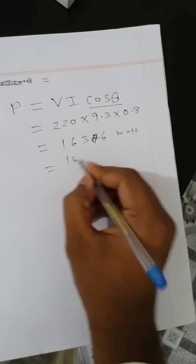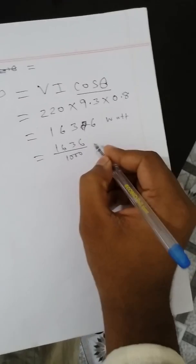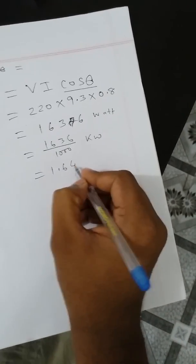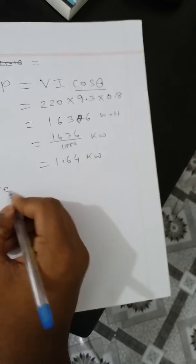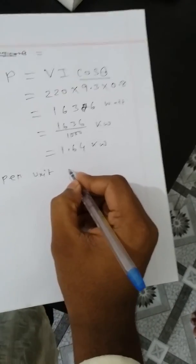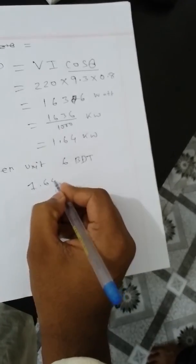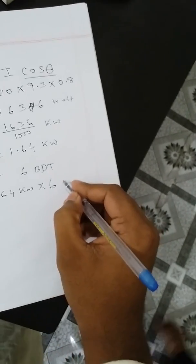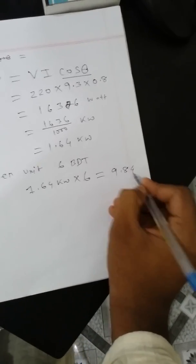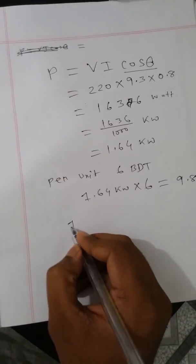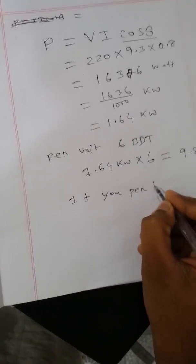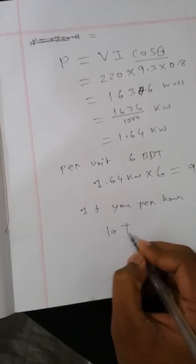Converting to kilowatts: 1636 divided by 1000 equals 1.64 kilowatts. If we consider the unit charge as 6 BDT or 6 Taka, then 1.64 kilowatts times 6 Taka equals 9.84 Taka per hour. So if you run your air conditioner for one hour, the bill will be around 10 Taka. You can apply this same calculation using your local electricity rate.